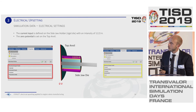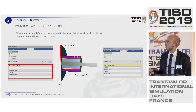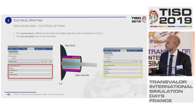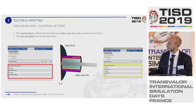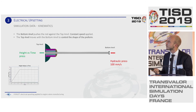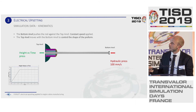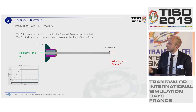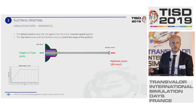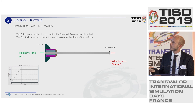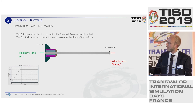For the electrical settings, the current input is defined on the side jaw holder with an intensity of approximately 1100 amperes. The zero potential is defined on the anvil, forcing the current to flow from the jaw holder toward the anvil. For the kinematics, the bottom anvil pushes the rod against the top anvil at a constant speed using a hydraulic press in FORGE. The top anvil also moves with the bottom anvil to control the shape of the preform, using a height-versus-time press definition to link both presses.